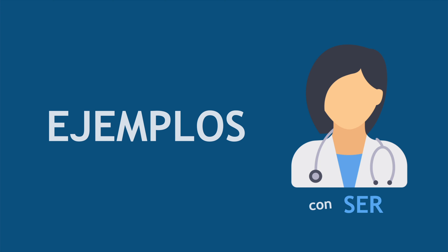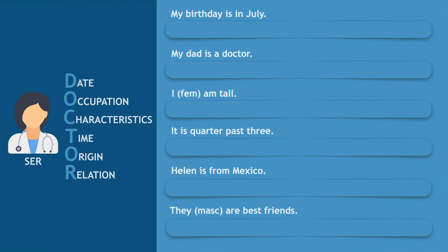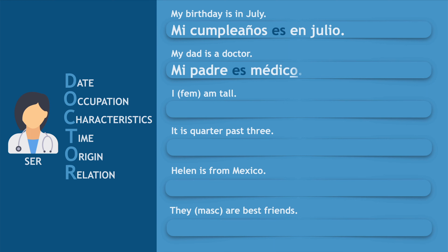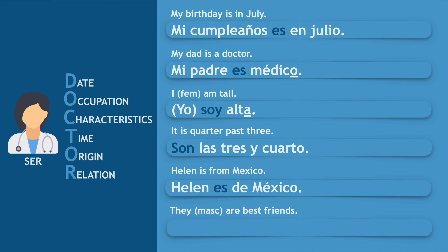Now let's see some more examples. The main objective here is for you to look at the English sentence and link each sentence to the right acronym, then translate. My birthday is in July — Mi cumpleaños es en Julio. My dad is a doctor — Mi padre es médico. I am tall — Yo soy alta. It is quarter past three — Son las tres y cuarto. Helen is from Mexico — Helen es de México. They are best friends, for masculine — Ellos son mejores amigos.